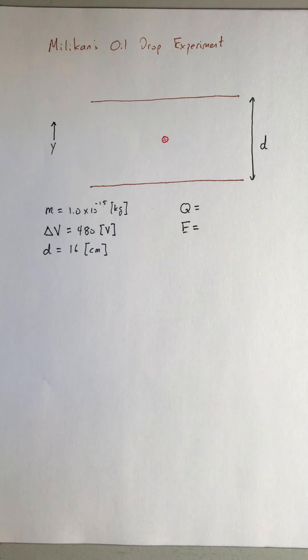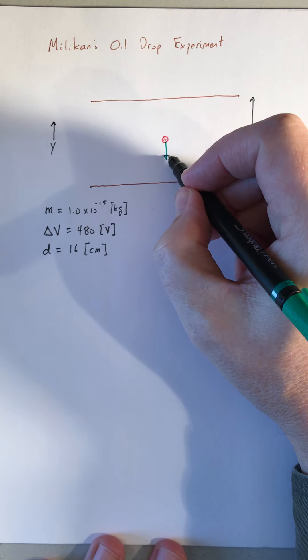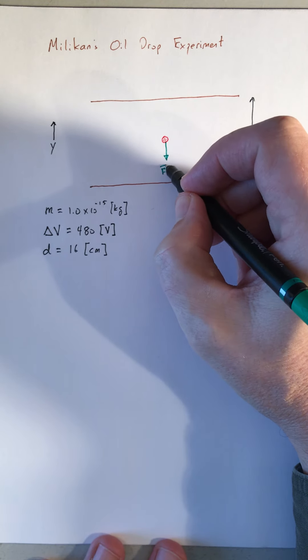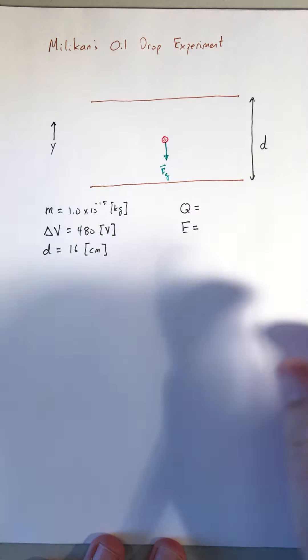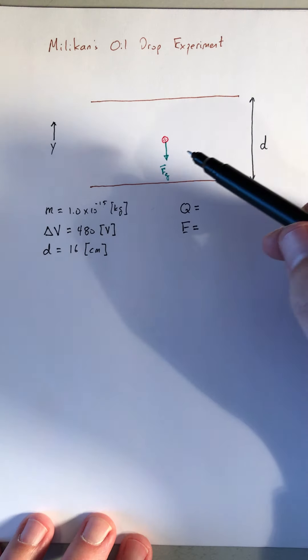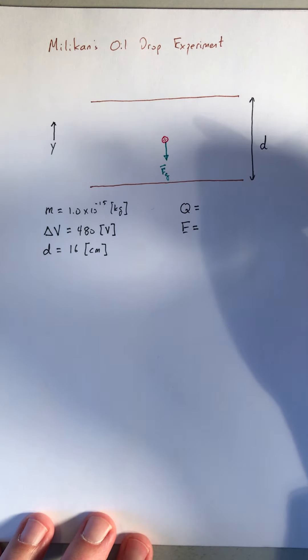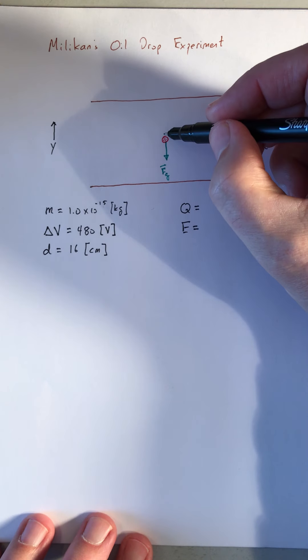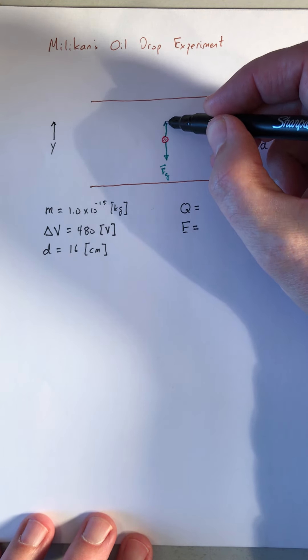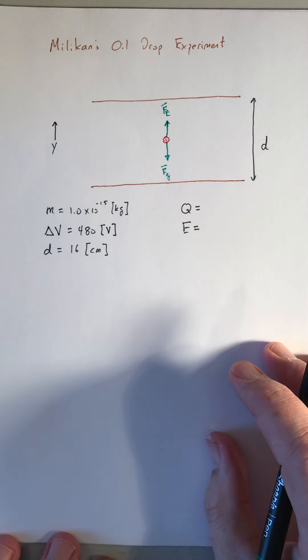Now thinking about the forces, if this oil drop is in equilibrium, well we know there's a force of gravity acting on it, and that's going to point down. For it to be in equilibrium, its weight has to be cancelled out by another force, and that's going to be the Coulomb force. I'm going to draw a force vector that is just as big, but in the opposite direction for the Coulomb force.